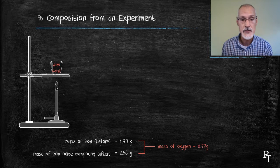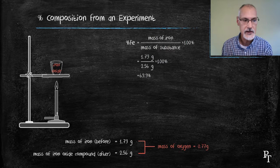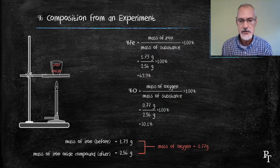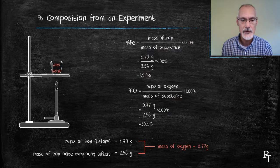So if I would like to know what the percent is of iron, I put the mass of iron over the mass of my substance, which I can see here from the data, and I get 69.9%. The percent of oxygen I could get by subtracting 100 or just doing a similar calculation using the 0.77 grams of oxygen.